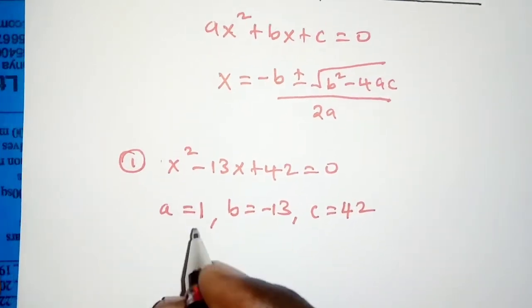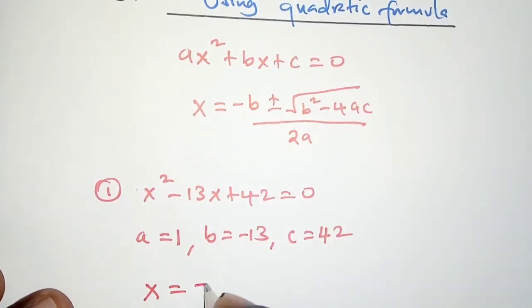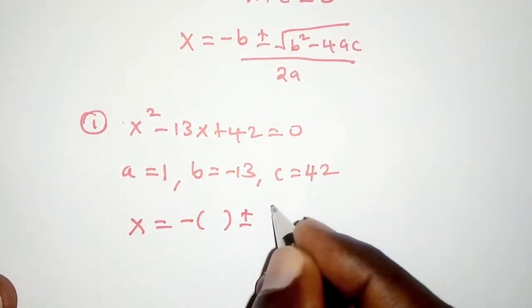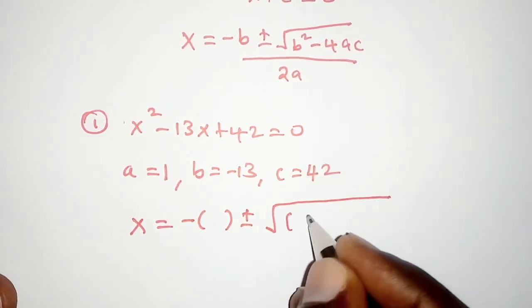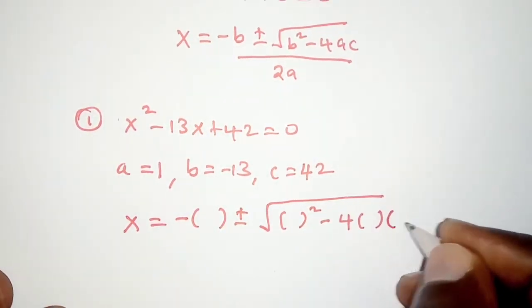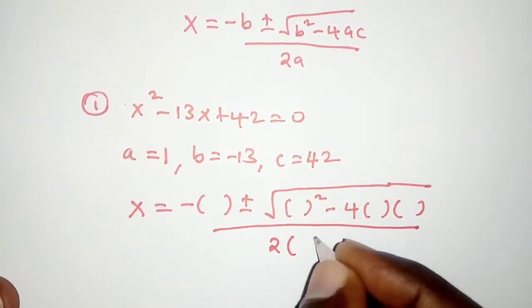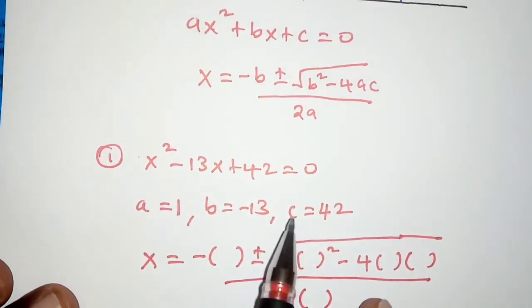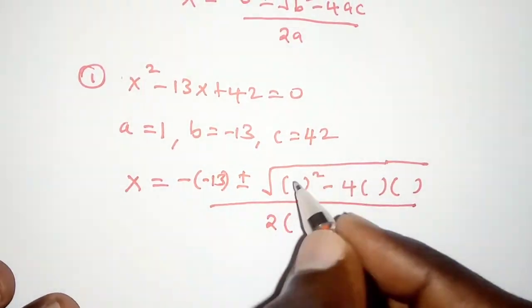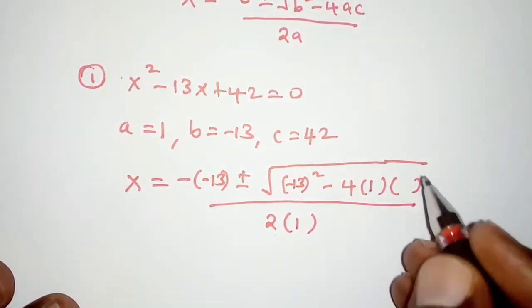So substituting, we'll say x is equal to negative b. So the value of b will substitute in that bracket plus or minus the square root of b squared minus 4a times c and then we'll divide that by twice a. So the value of b we have as negative 13, the value of a here is 1, c is 42.